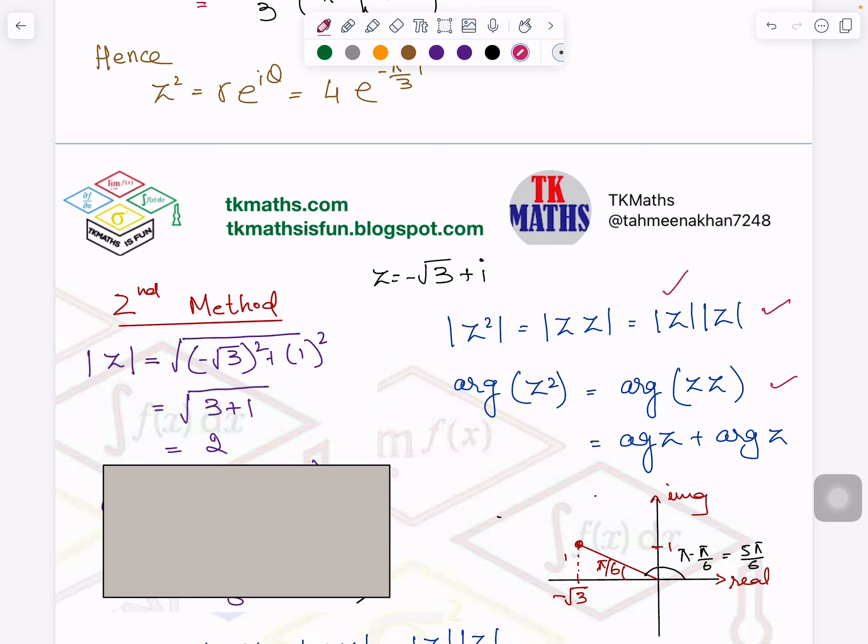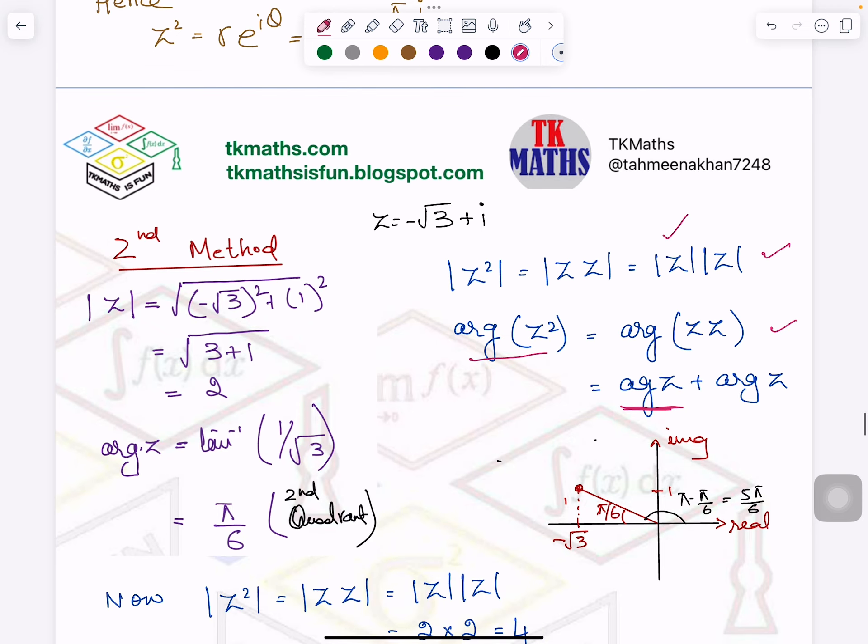Similarly, I will find out the argument of Z. Once I know it, I will add it because argument of Z square is Z times Z. So I found modulus of Z is 2 and argument of Z is π/6. You can see here and here.